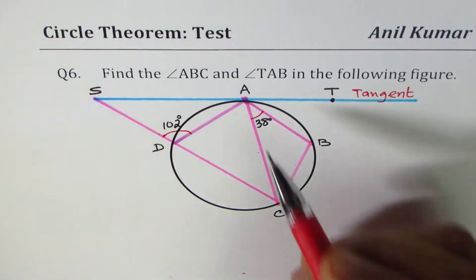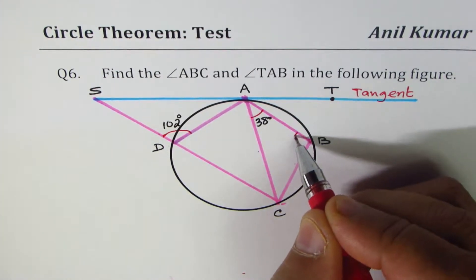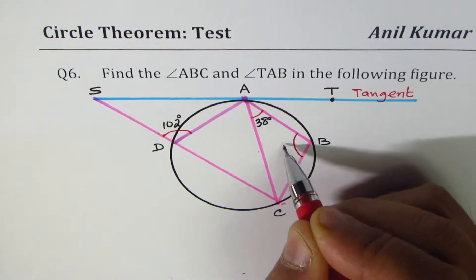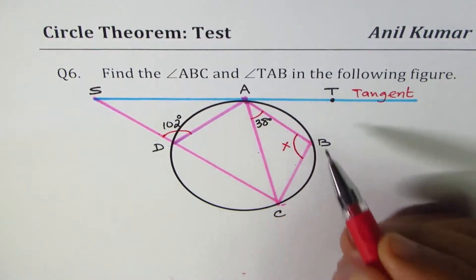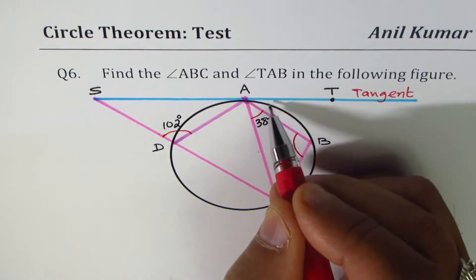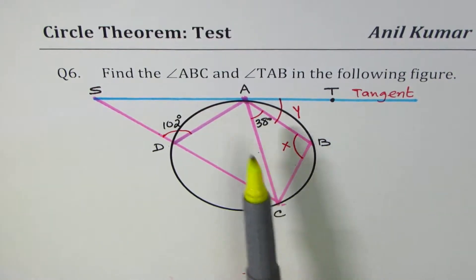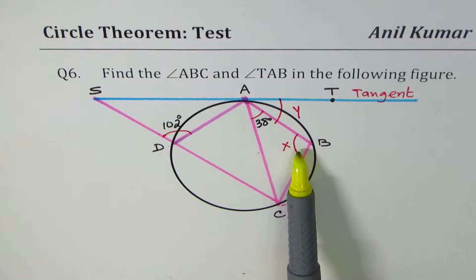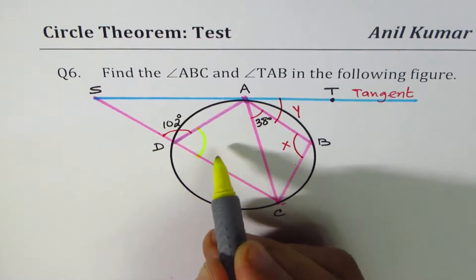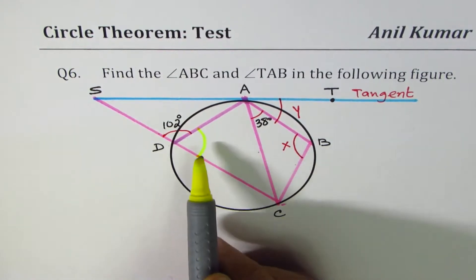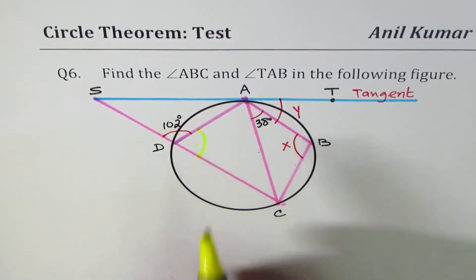Now, find the angle ABC. ABC is this angle which we need to figure out. Let's call this X, and angle TAB is the other angle, this one. Let's call this as Y. Now, you can see that in the quadrilateral, we have to find angle B, which is one of the angles of cyclic quadrilateral. So that means we should figure out what is the angle opposite to it. Sum of these two is 180 degrees. That should help.